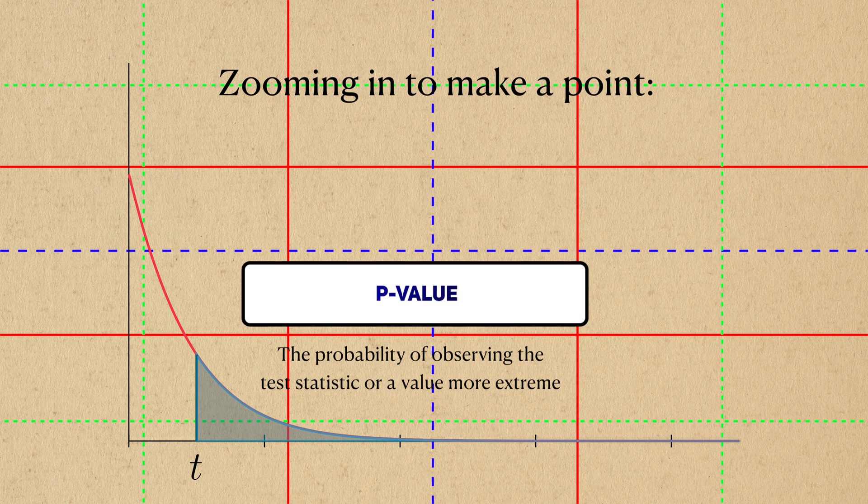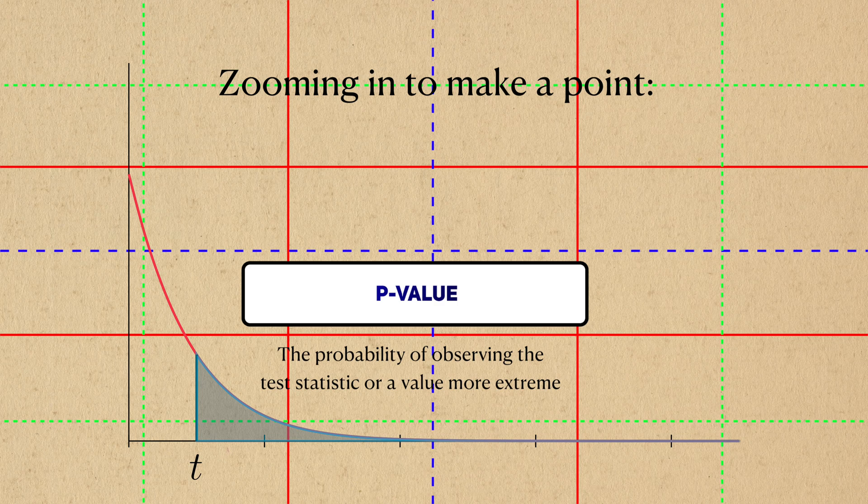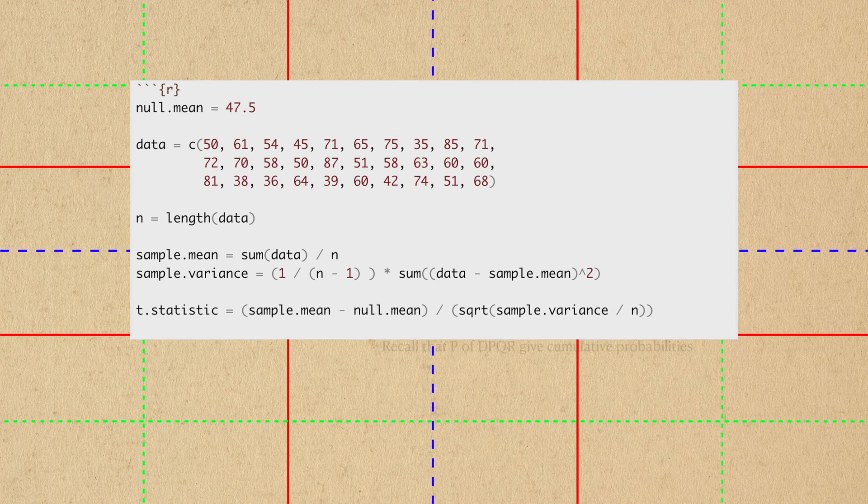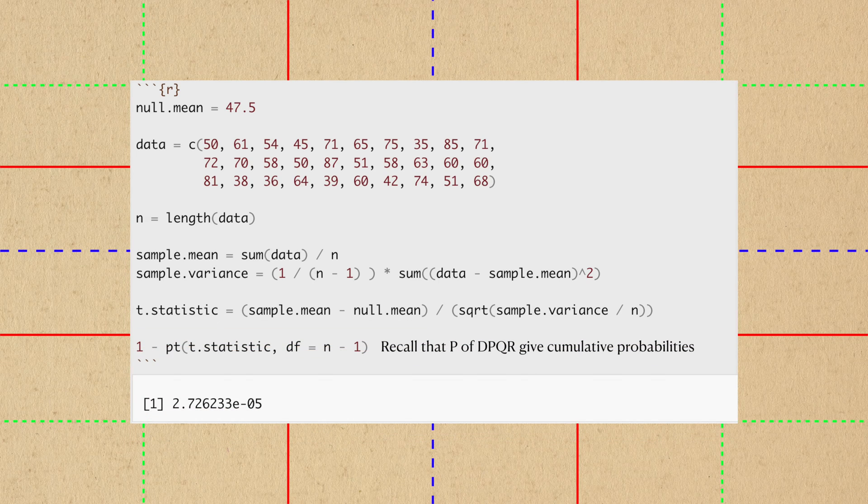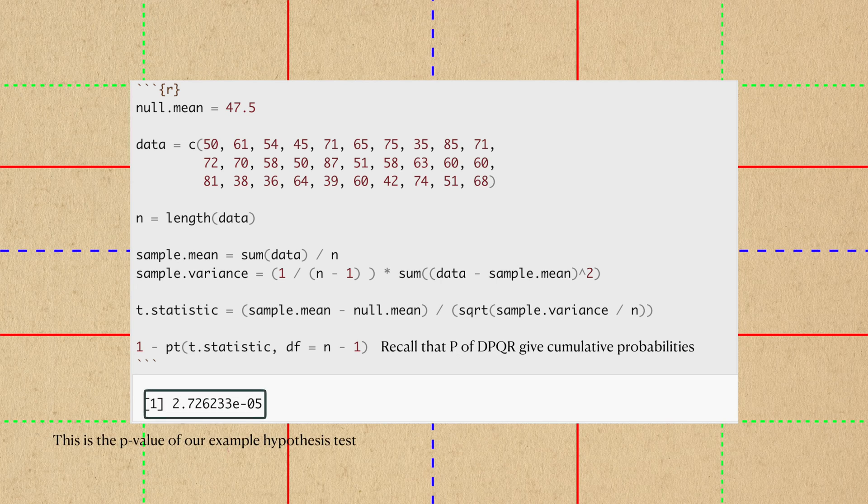This cumulative probability is the infamous p-value that many researchers are familiar with. We'll use the pt function to calculate this p-value, and we can see that it's very small.